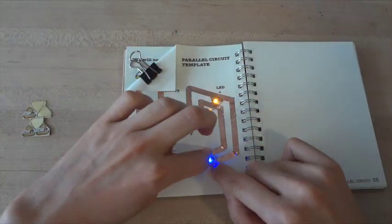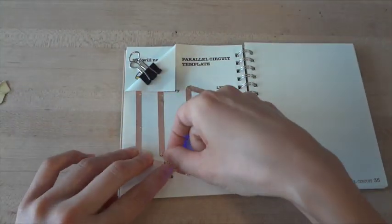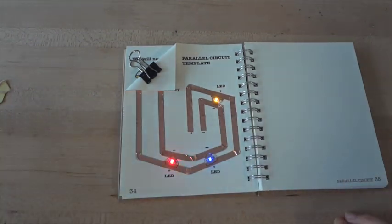Just make sure that they're all pointing in so that the LEDs are properly connected to the battery. The more lights you add, the faster your battery will drain, so keep that in mind as you build your circuit.